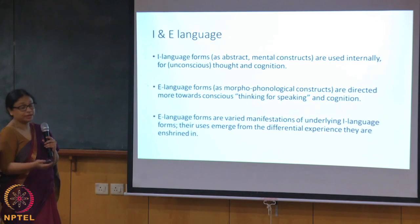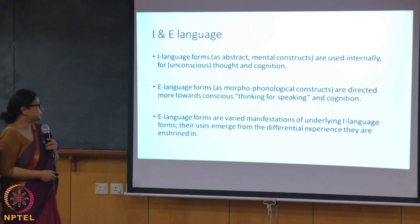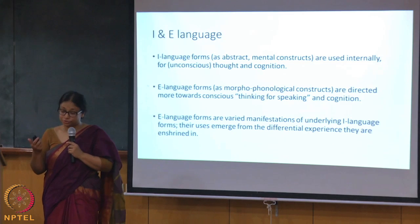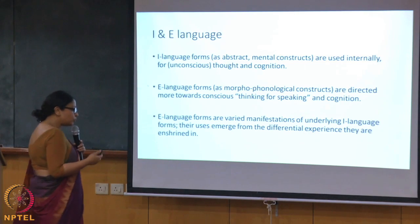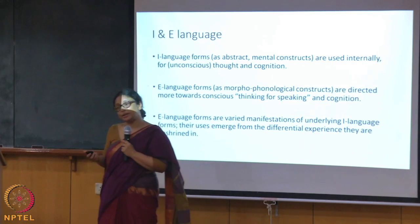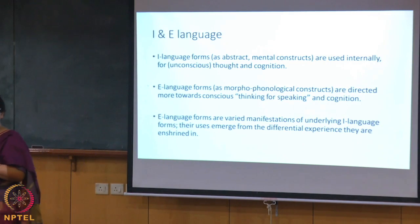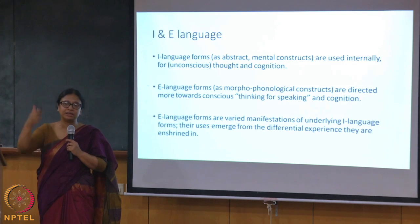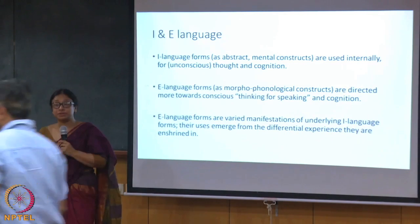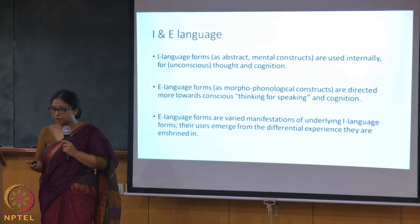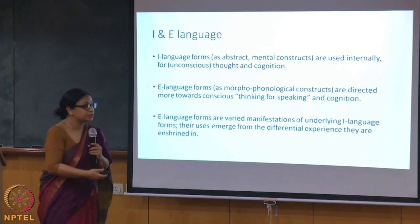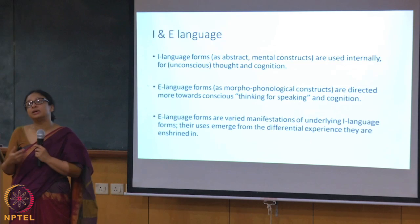E language forms are manifestations — varied manifestations — of underlying I language forms. I language forms we take as universal, and E language forms are manifestations whose uses emerge from the differential experience they are enshrined in. If we look at grammatical categories of human language, including gender, each could be dealt with at two different levels: I language and E language. E language users are extremely varied — that is where you find cross-linguistic variation.